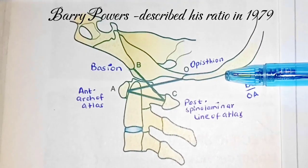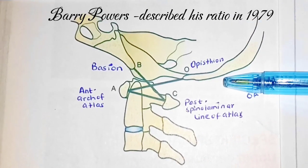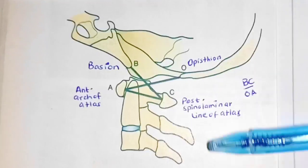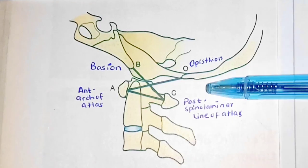The Power's ratio was given by Barry Power who was an American radiologist and this Power's ratio is used to diagnose the atlanto-occipital dislocations.